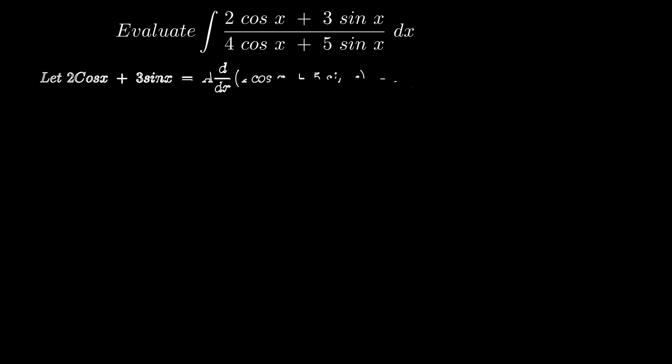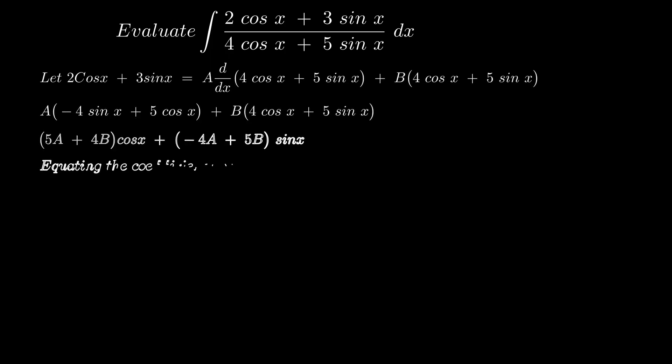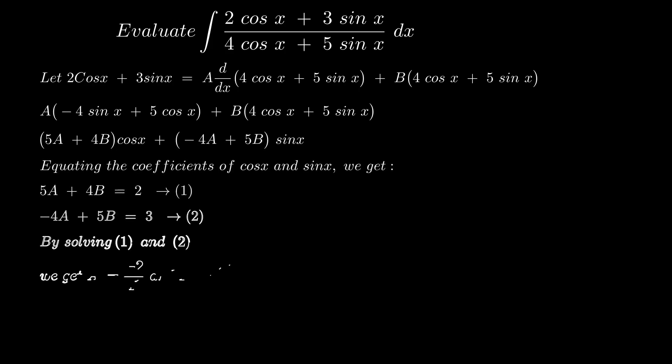Here if we take 2 cos x plus 3 sin x is equal to A multiplied by d/dx of 4 cos x plus 5 sin x and B multiplied by 4 cos x plus 5 sin x. Let's simplify this equation.